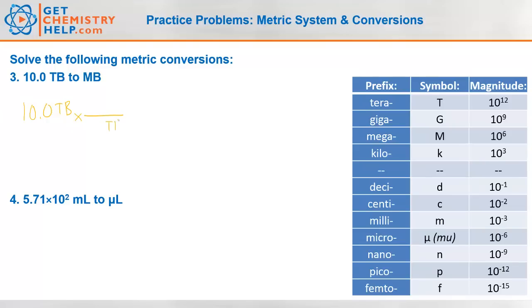So let's turn terabytes into bytes. What is a terabyte? Tera is 10 to the 12th. So a terabyte is 10 to the 12th bytes. We'll just put a 1 there with the terabyte. So now terabytes have canceled.